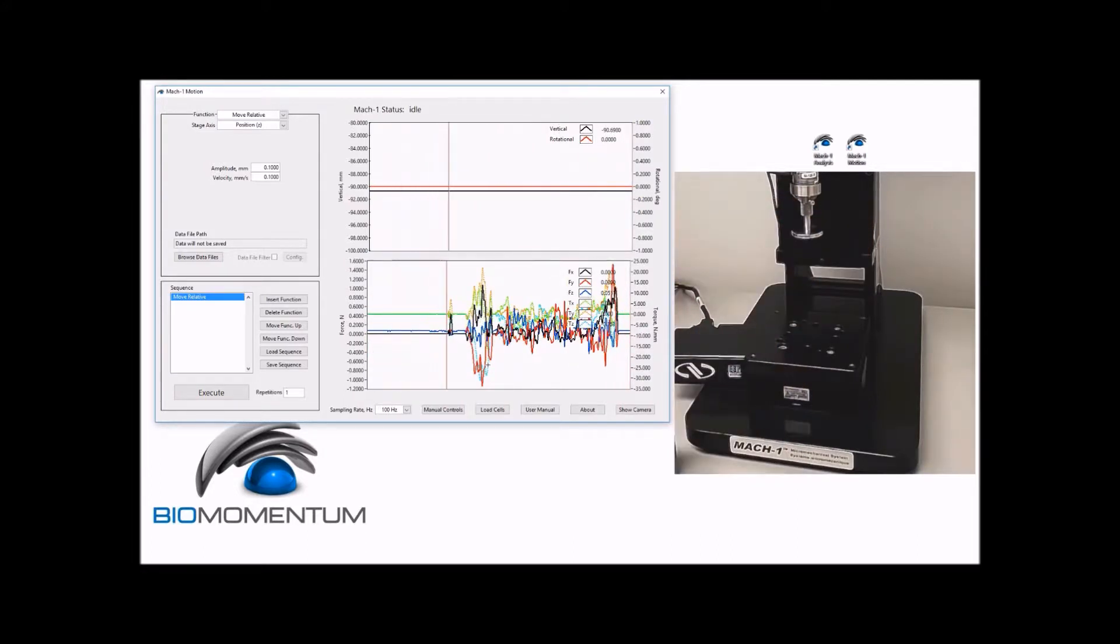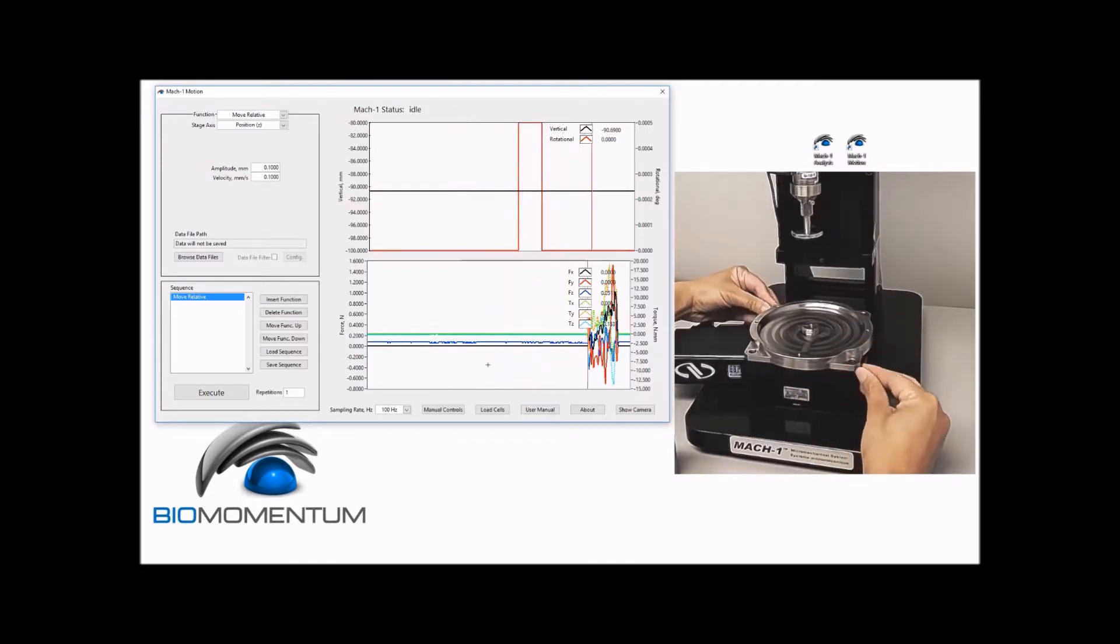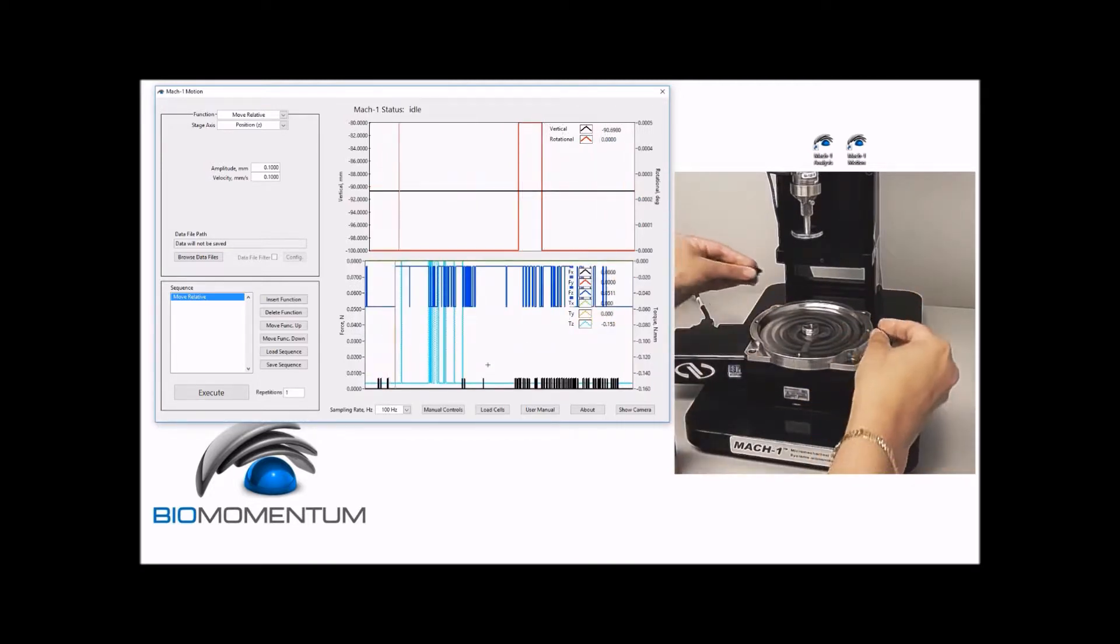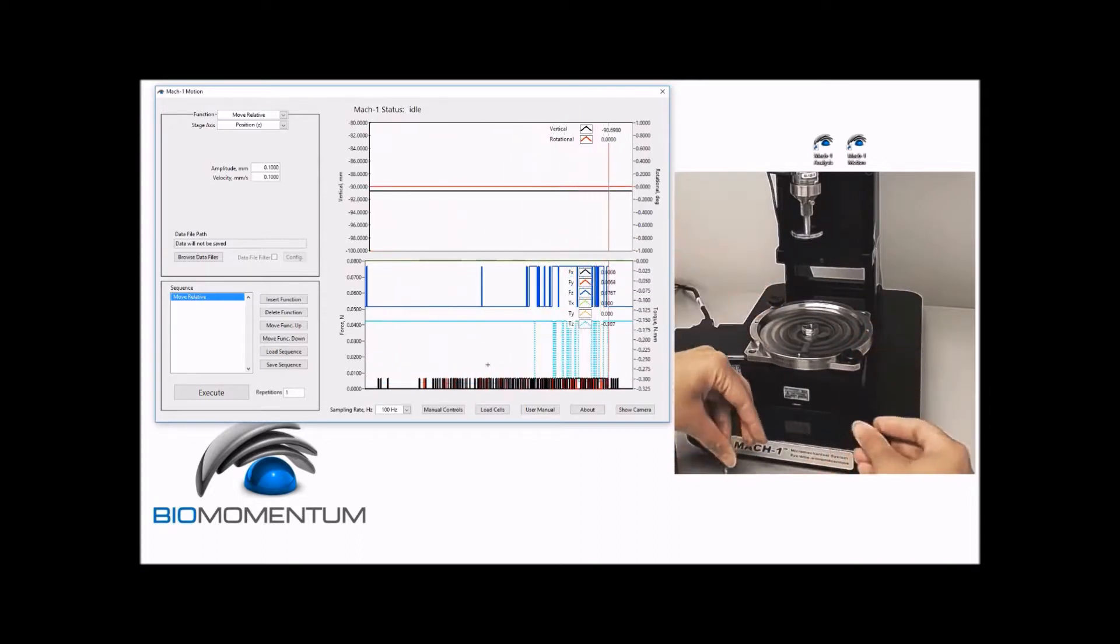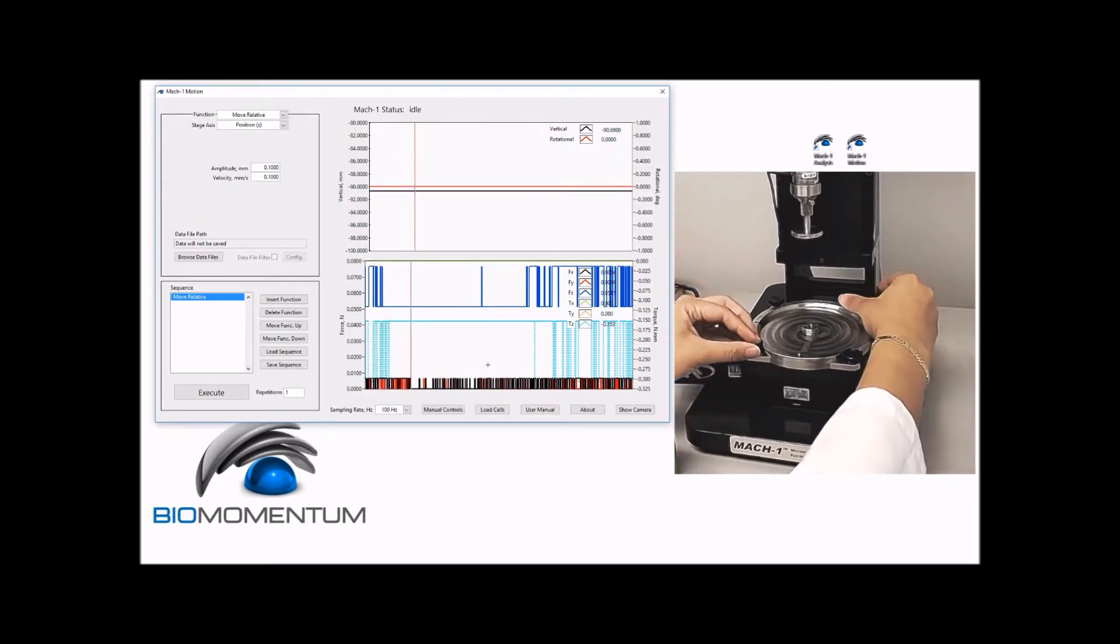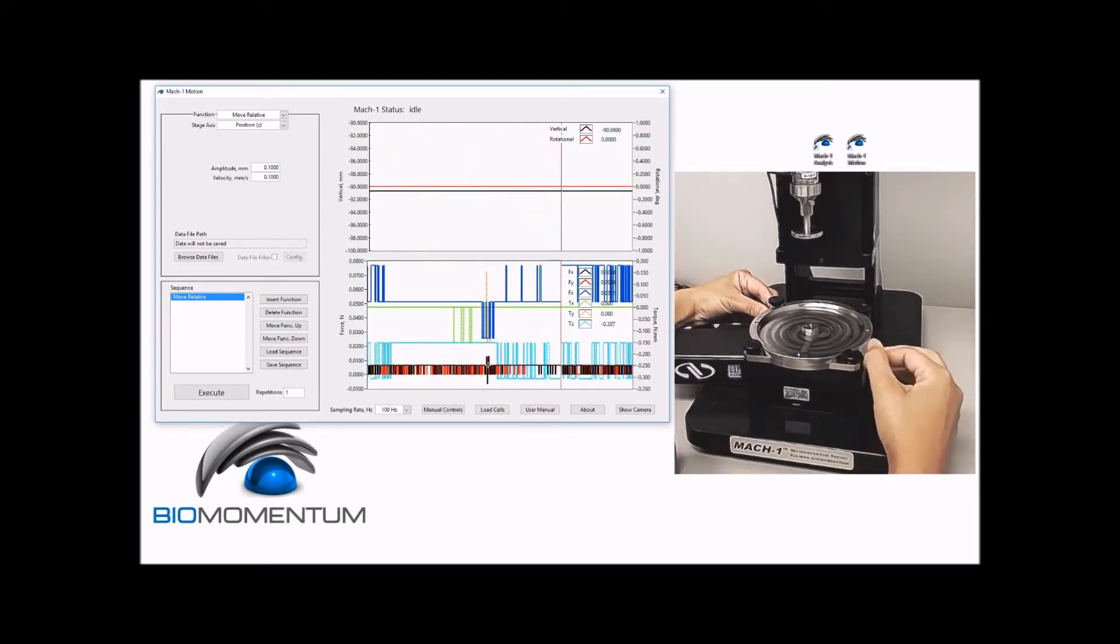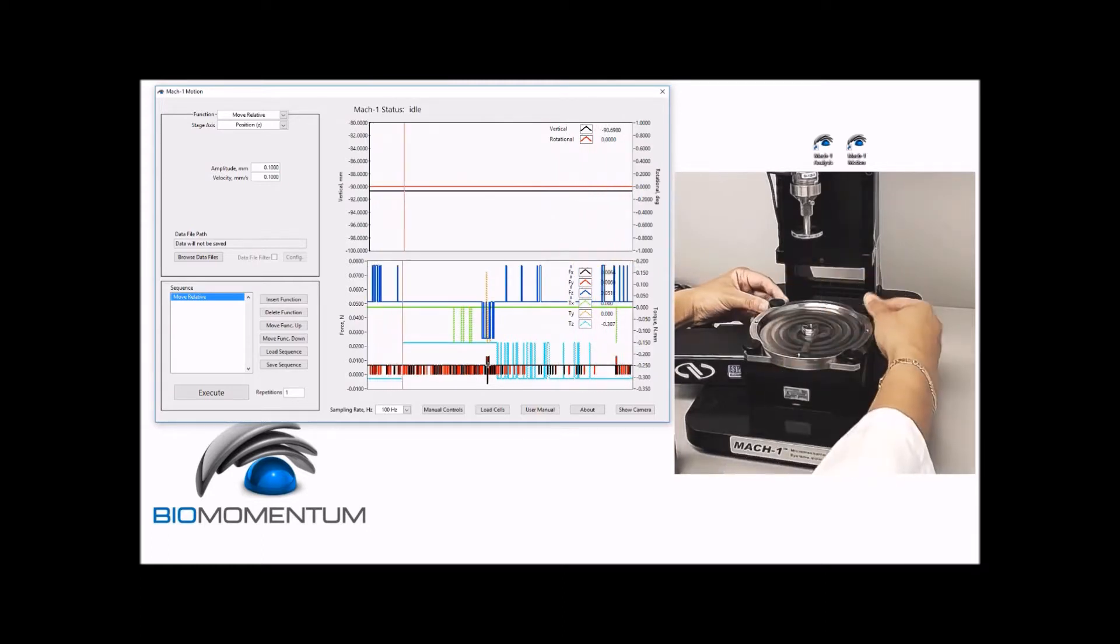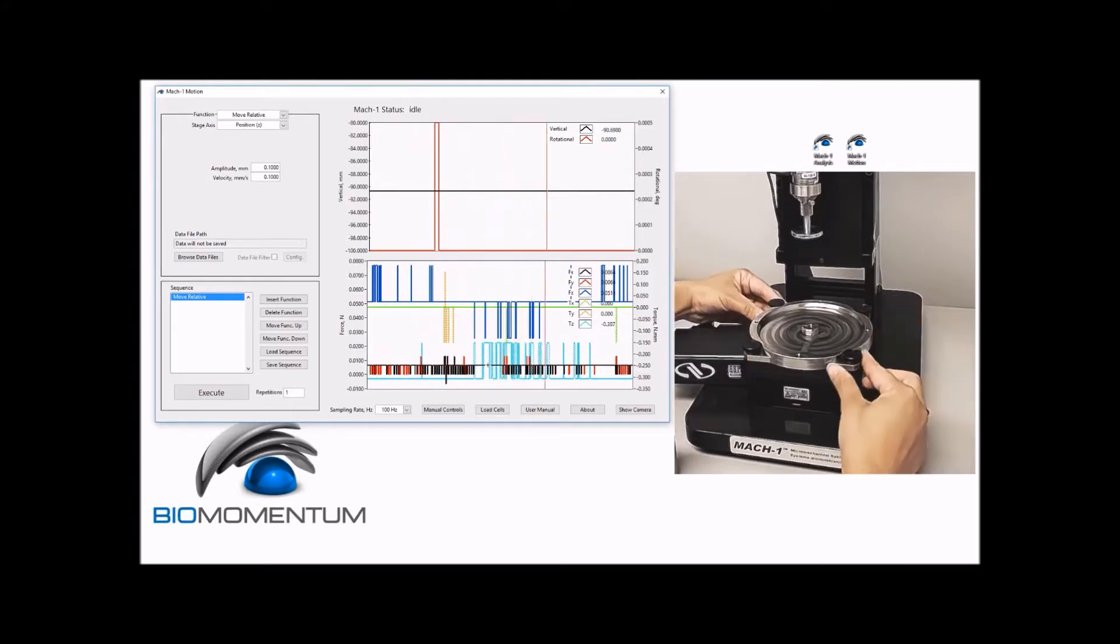Then secure the testing chamber onto the rotational stage using the four screws. It is essential that the rotational stage central axis be aligned with the center of the multi-axial load cell. Perform any necessary adjustments in the stage axial alignment using the four screws to ensure that the testing chamber is perfectly aligned on the rotational stage.